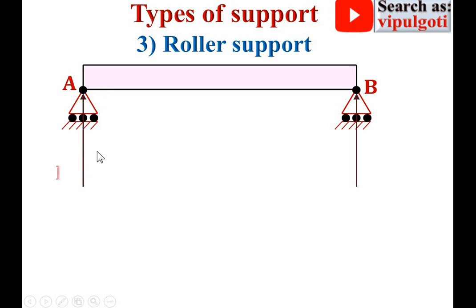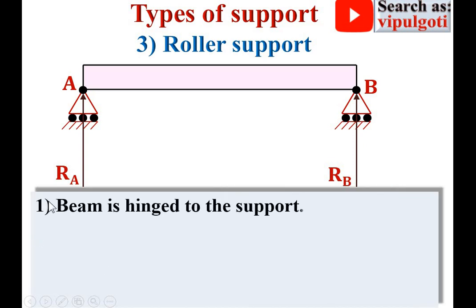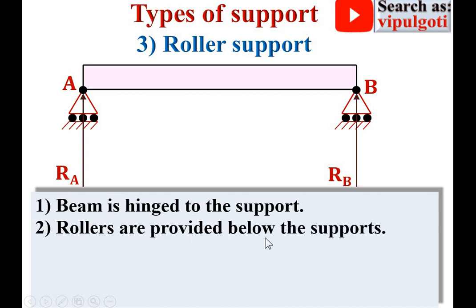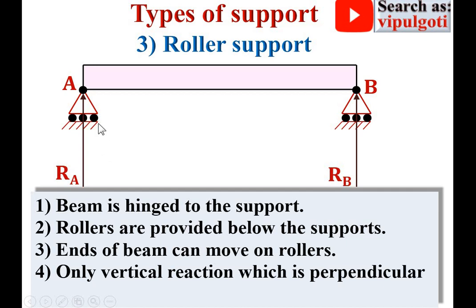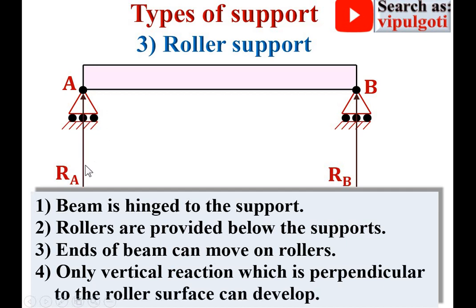So this is the vertical reaction at point A and the vertical reaction at point B. Important points for roller support: first, the beam is hinged to the support; second, rollers are provided below the supports; third, ends of the beam can move on the rollers; and fourth, only vertical reaction develops, which is always perpendicular to the roller surface — no horizontal reaction.